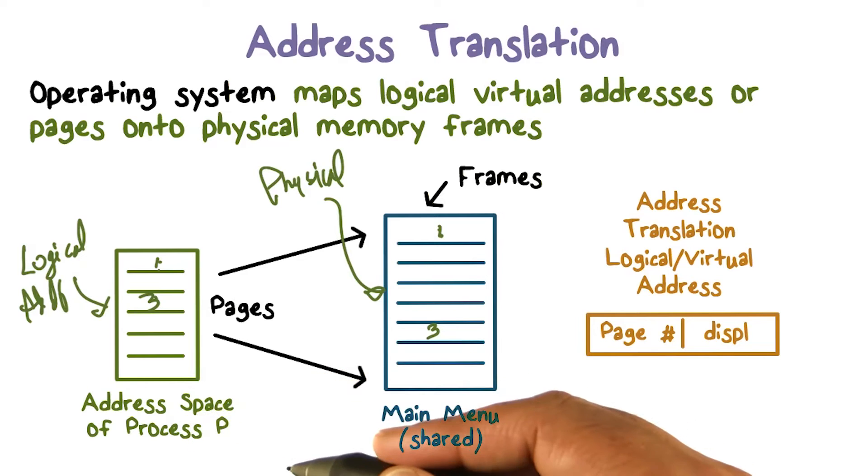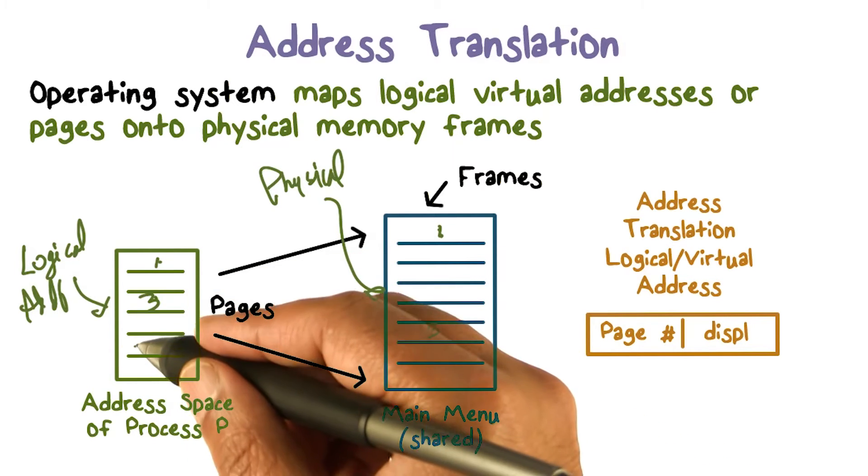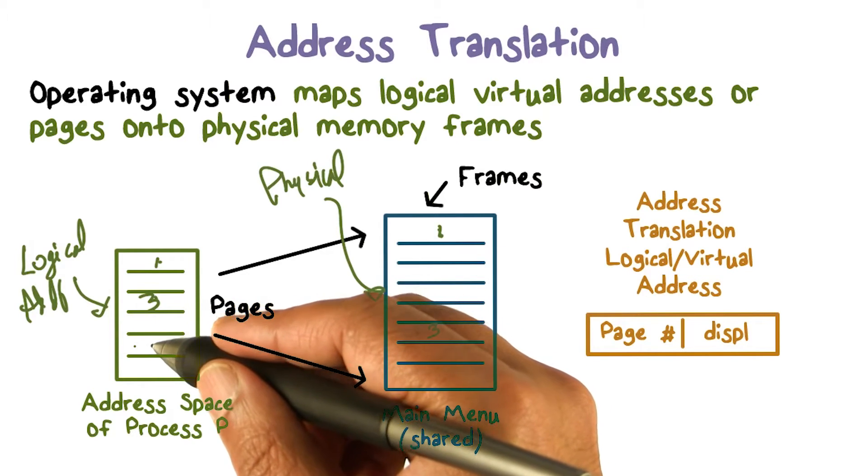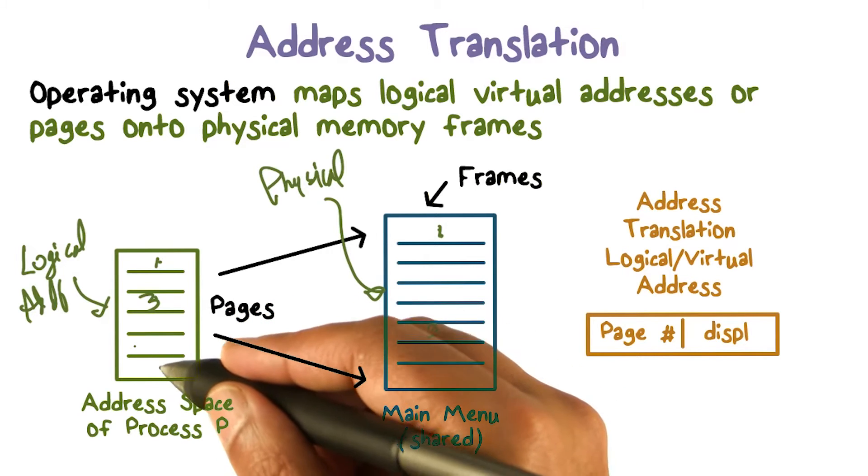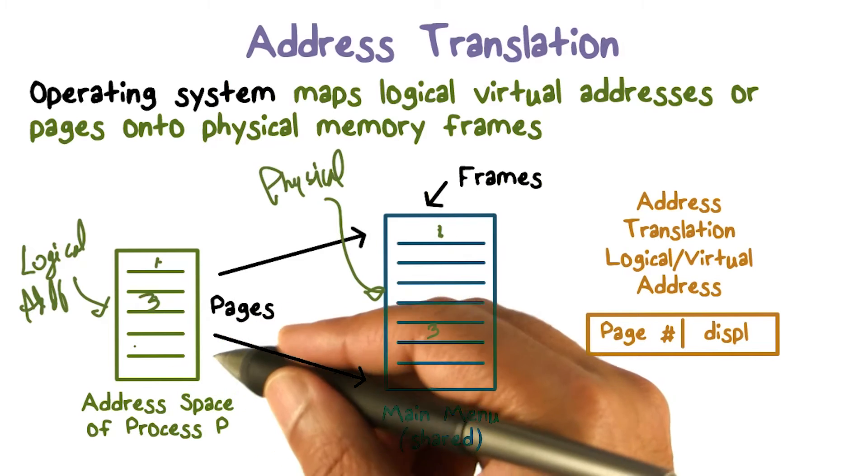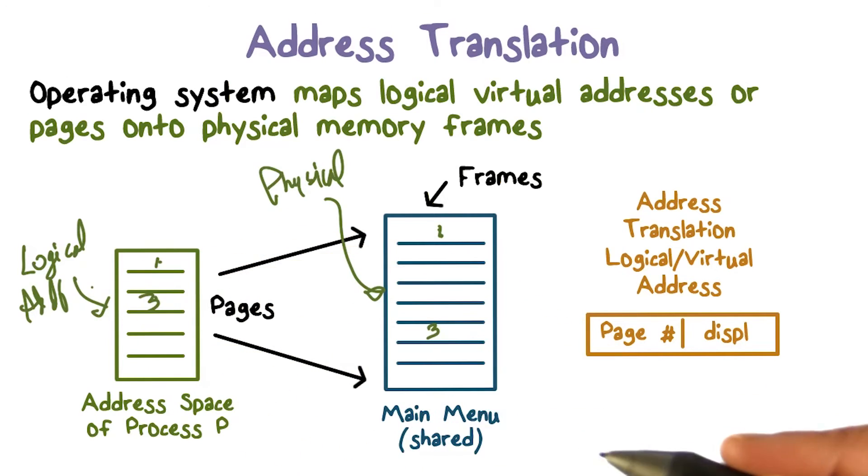If your address happens to be, let's say, 4K plus 3, then it's going to be the second page because the second page starts at 4K. First, 0 through 4K minus 1 goes in the first page, and then the second one starts. So then we'll say it's page 2 and maybe displacement 5 or 2 or whatever it is. So the logical address, you can think of that as a page number and a displacement.